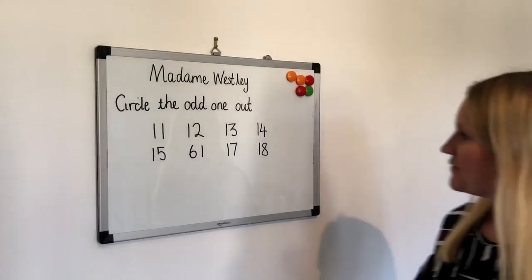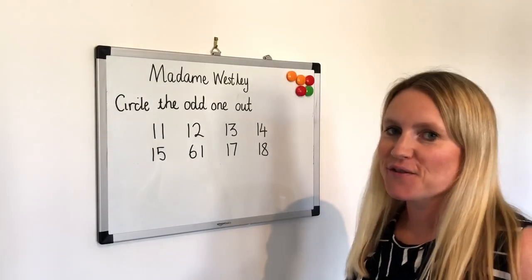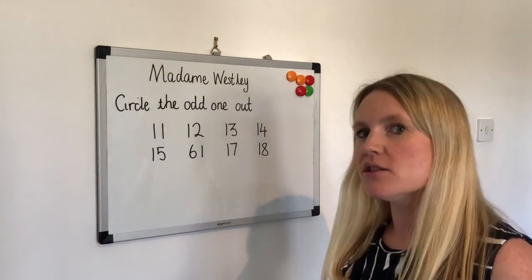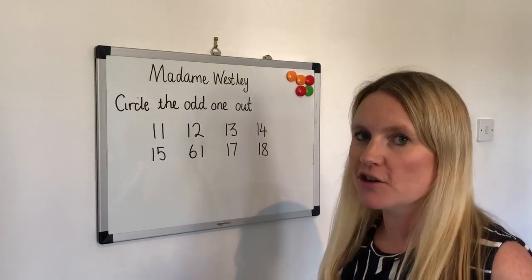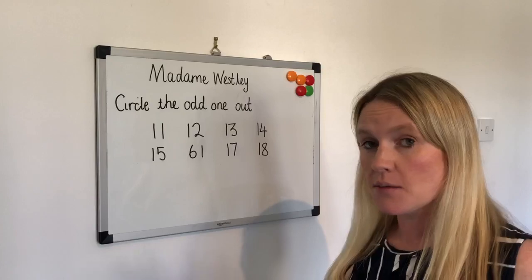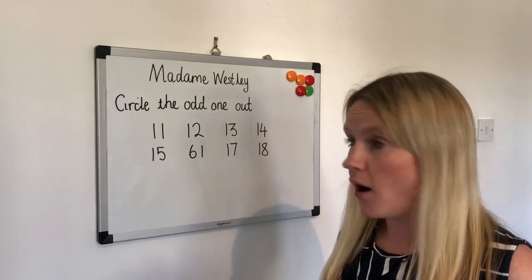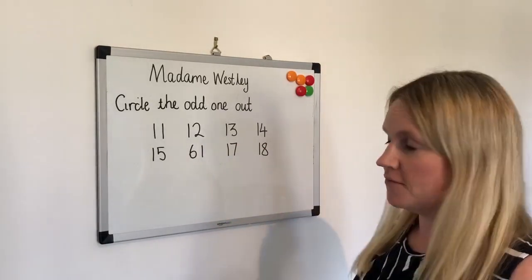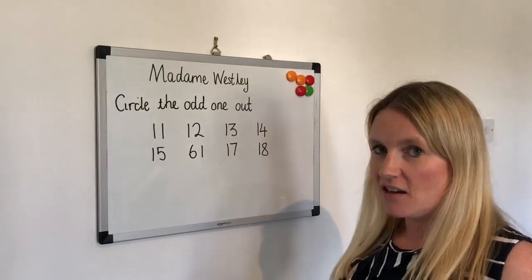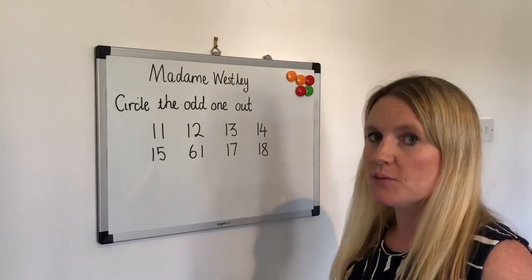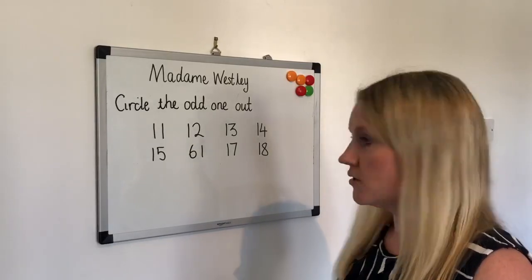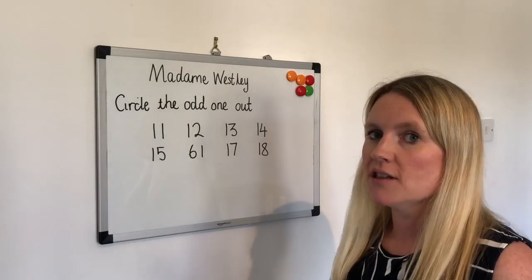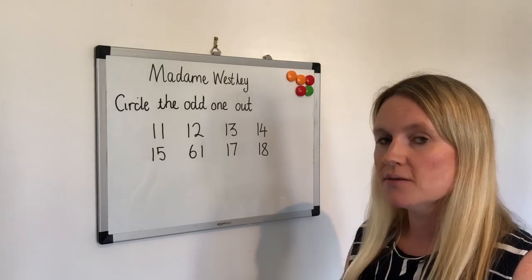Well done for working through your first question — you did a really good job. Now this one is called 'circle the odd one out', and then we're going to explain why. Look at these numbers and think about which one's the odd one out. When you've worked it out, write it on your whiteboard.